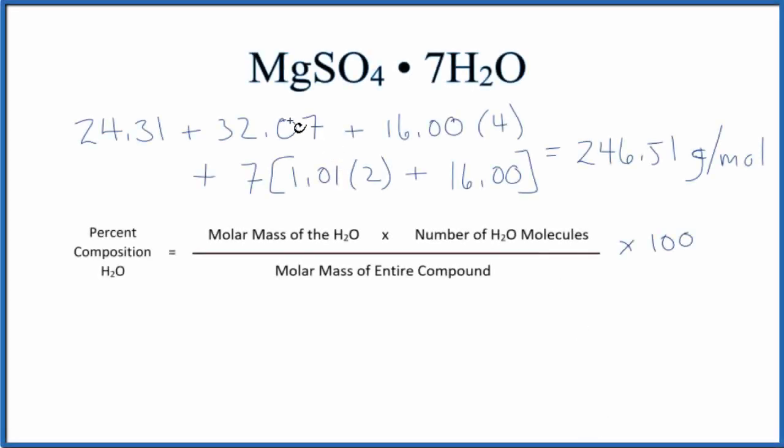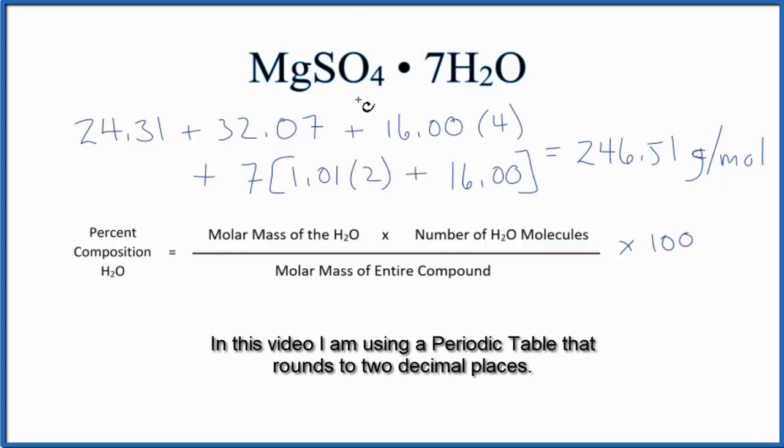In this video, we'll find the percent composition by mass for the water in magnesium sulfate heptahydrate. To do this, the first thing we'll do is find the molar mass for the magnesium sulfate.